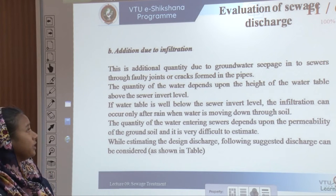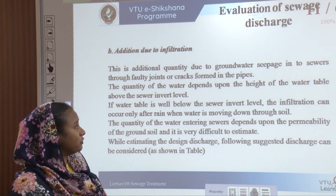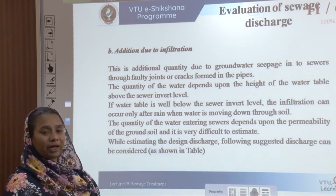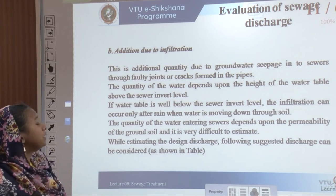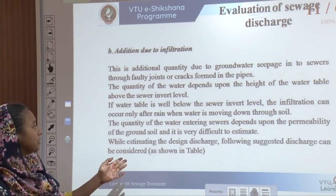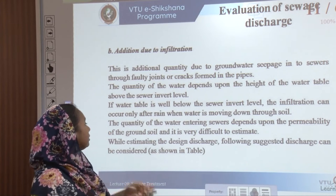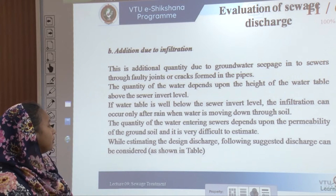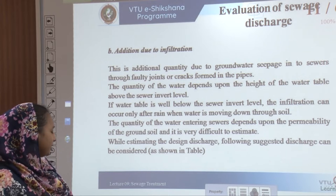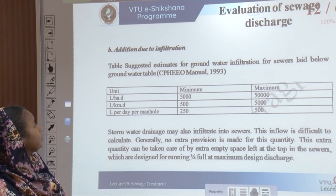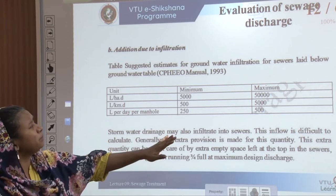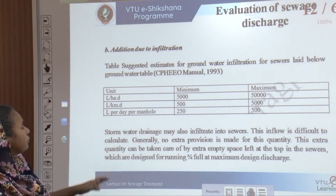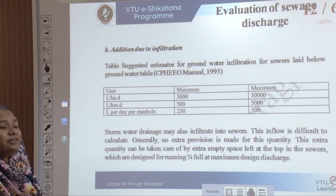Another addition occurs due to infiltration — additional groundwater entering sewers through faulty joints or cracks in pipes. The quantity depends on the height of the water table above the sewer invert level. If the water table is well below the sewer invert level, infiltration can occur only after rain when rainwater moves down through the soil. The quantity entering through sewers depends on the permeability of the ground soil and is very difficult to estimate. A table estimates minimum and maximum groundwater infiltration for sewers laid below a particular water table level.